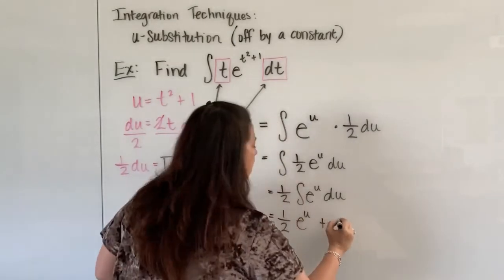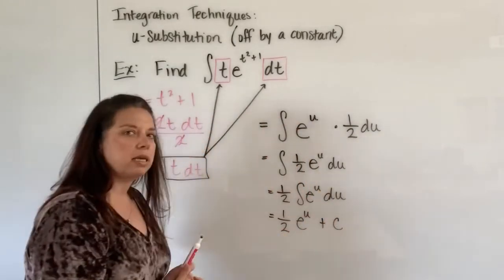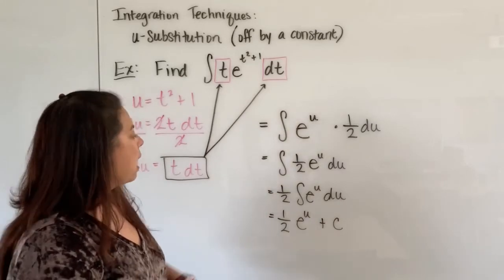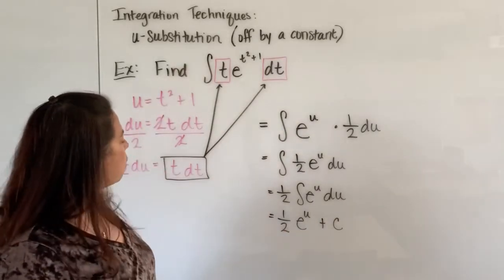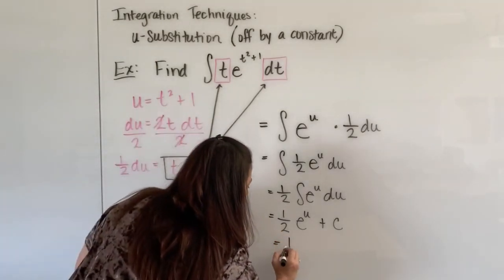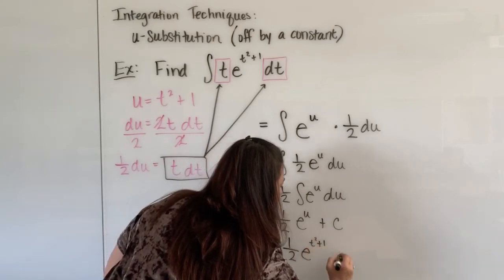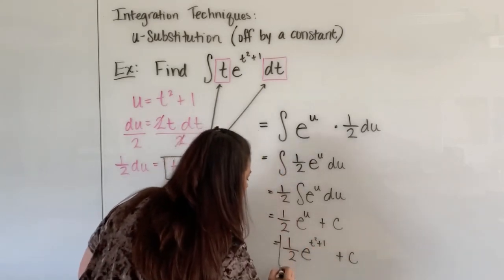Of course because I didn't have boundaries on my integral I have to add my c here at this stage. And we also have to bring back what we know u to be which is t squared plus 1. So plug that in. We have 1 half e to the t squared plus 1 plus c in the end.